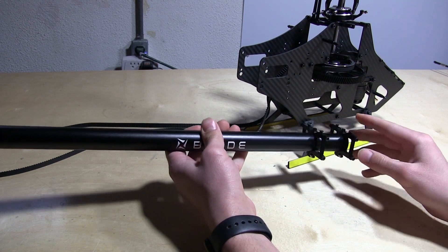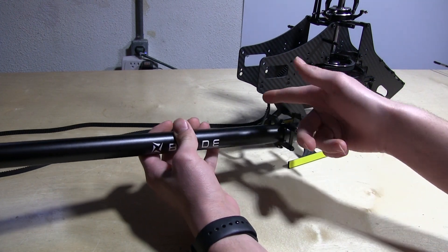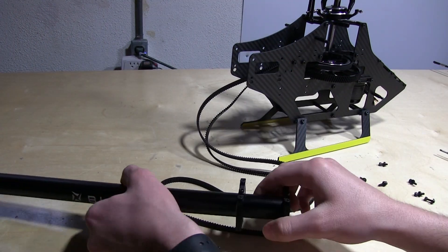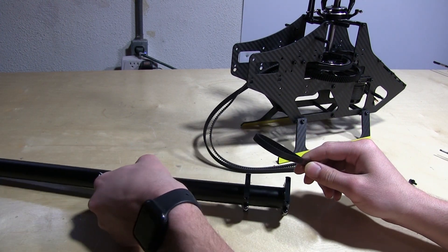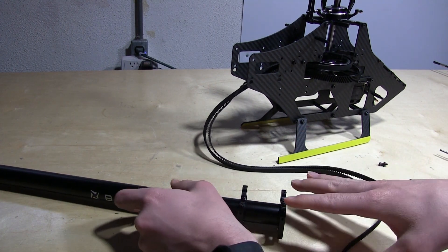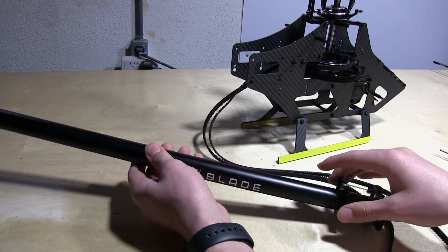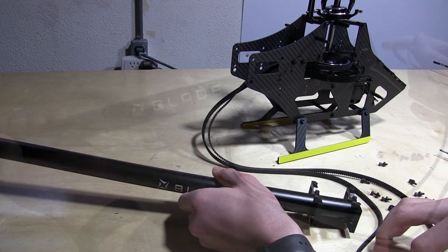Now that these blocks are secure, we can mount the tail boom to the main frame. This is very easy as it's just eight screws in total, and then we just feed the tail belt through the tube. If you have trouble feeding the belt through, what I like to do is tie a piece of string around the belt and feed the string through the tube, as it's easier. I can pull the string out through the other side and it'll pull the belt with it.